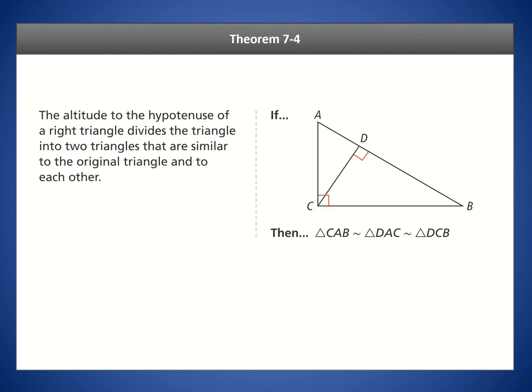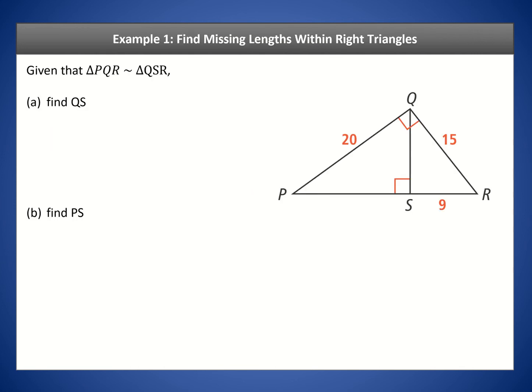Theorem 7-4 states: the altitude to the hypotenuse of a right triangle divides the triangle into two triangles that are similar to the original and to each other. Basically, if you draw an altitude from the right angle to the hypotenuse, you form three similar right triangles. Let's go ahead and investigate this in example one.